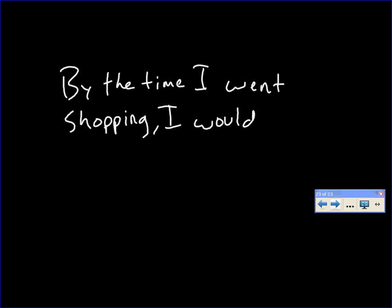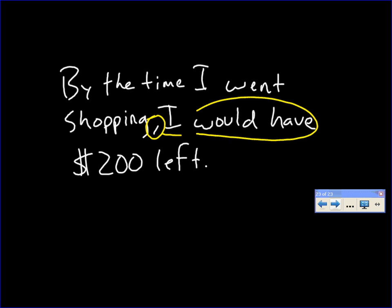This is an excellent example because it shows how long these introductory elements can be. This is, by the time I went shopping, I would have $200 left. Daniel, you did such a good job last time. What is the noun, verb, subject, predicate pair in the sentence? I. Would have. It's the entire thing. All right. Keep up that work.